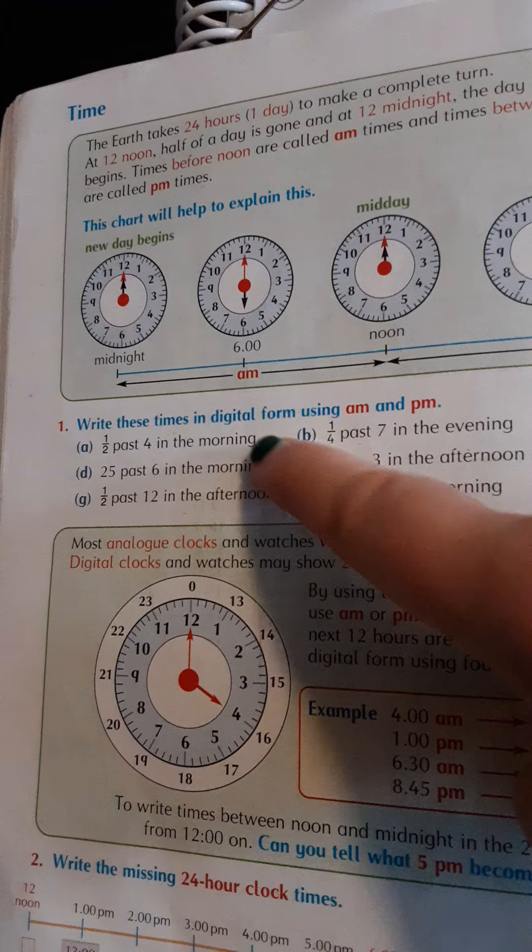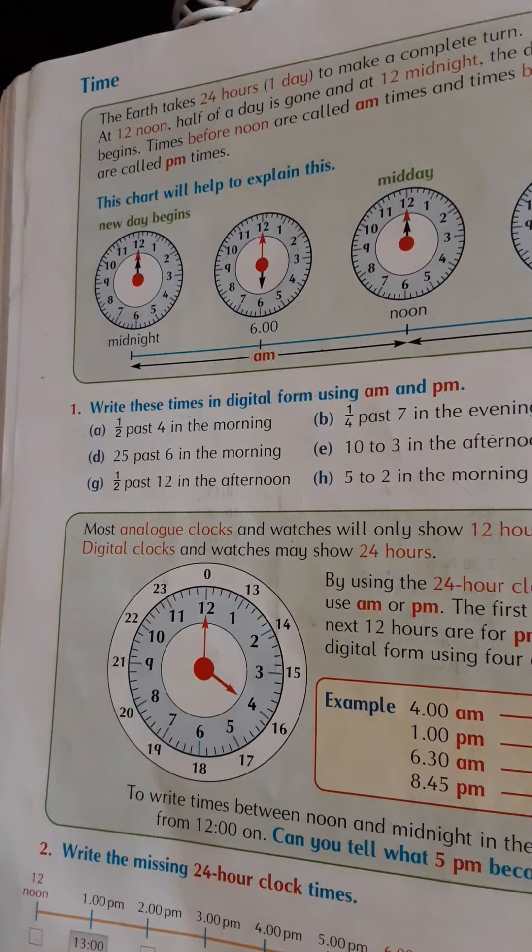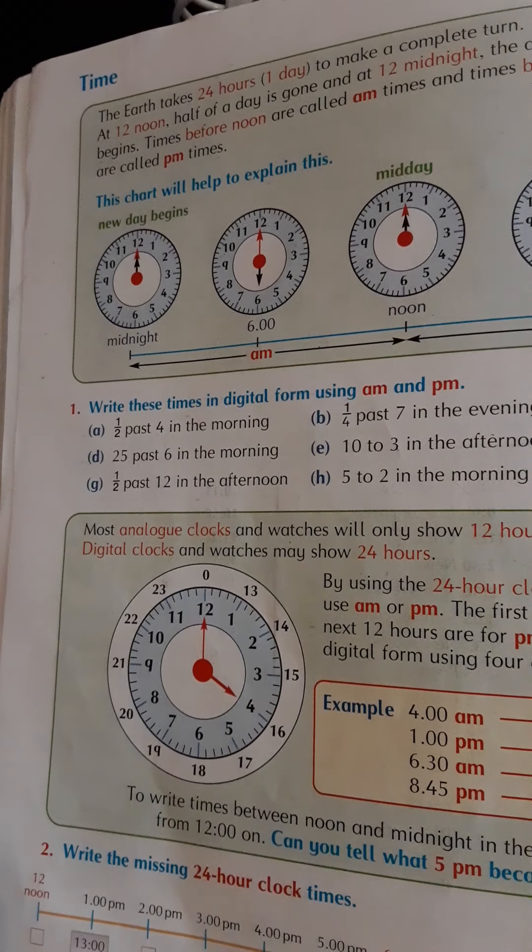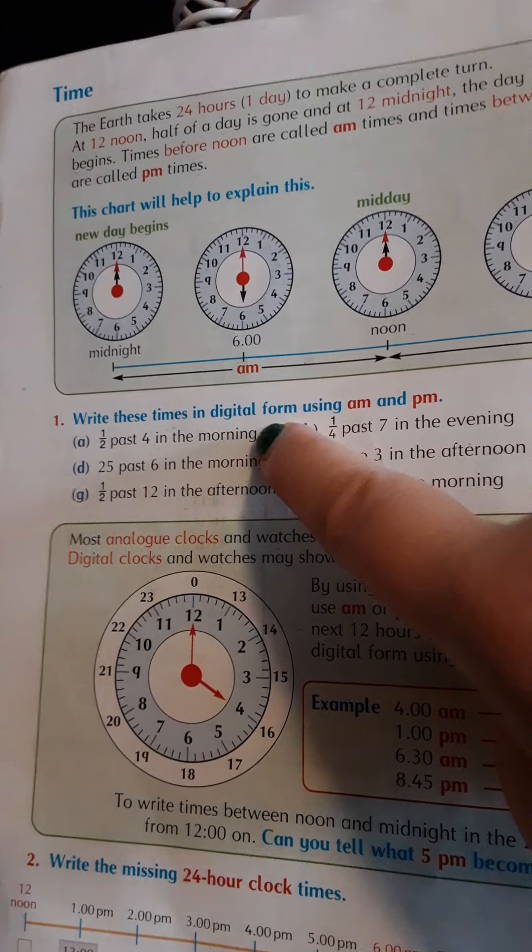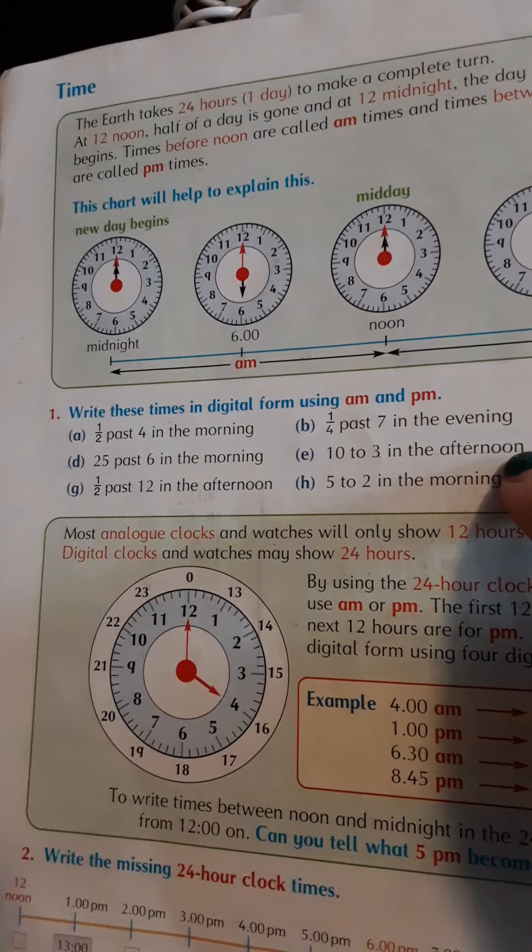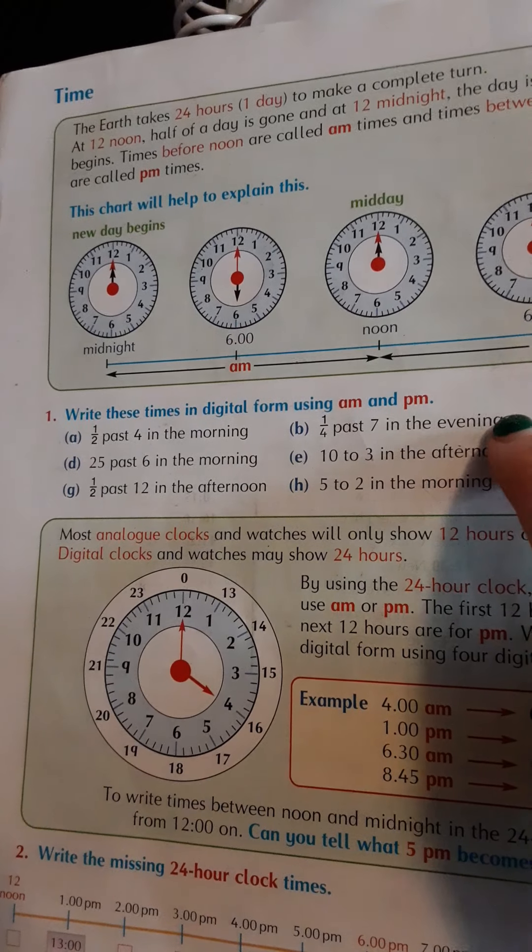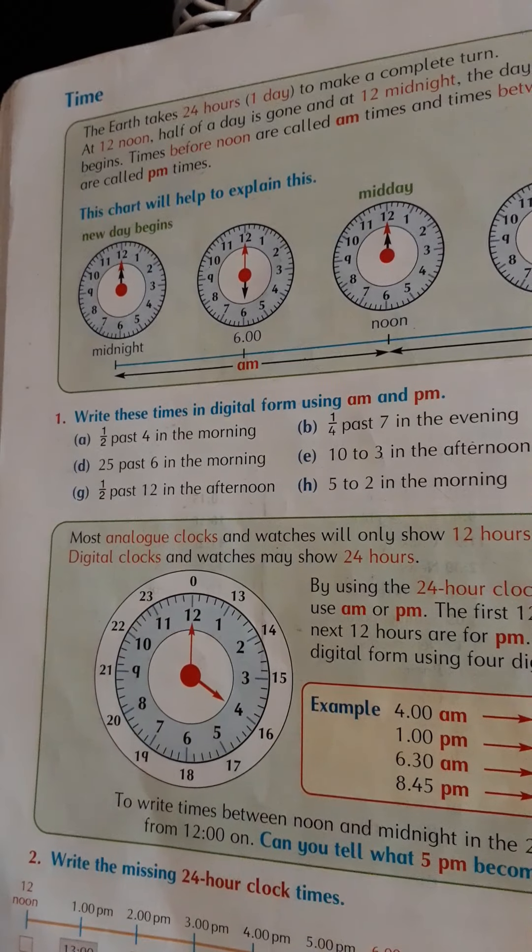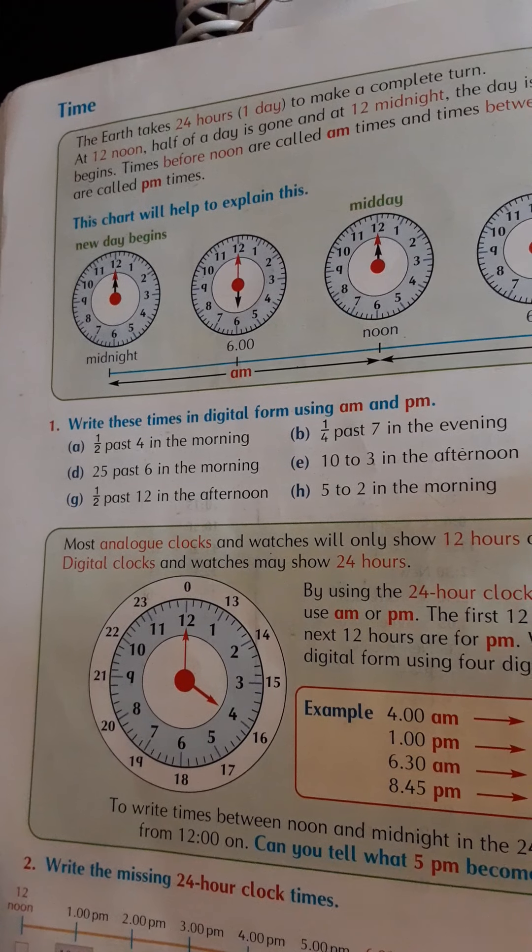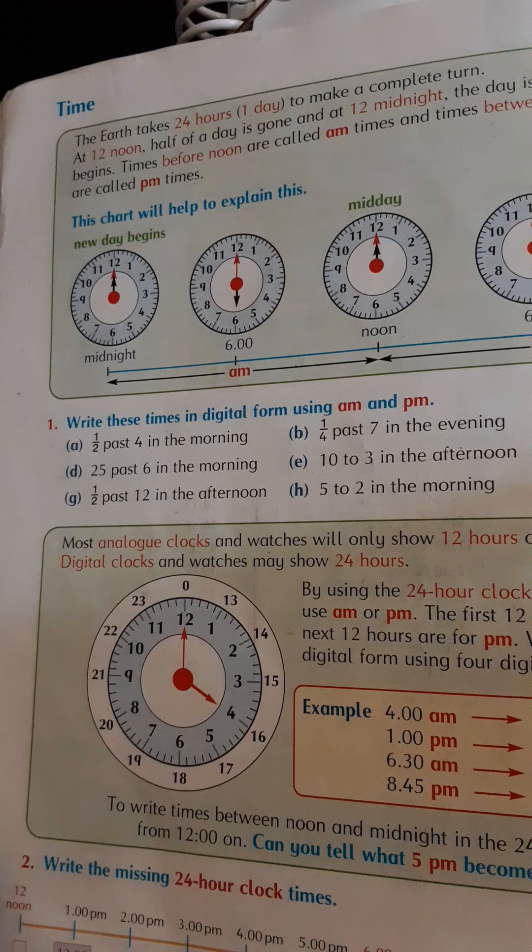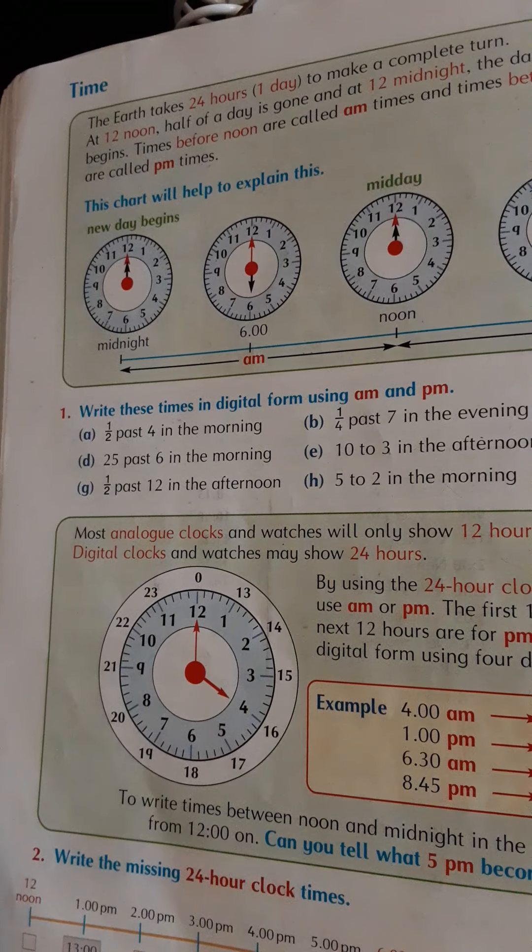So down here we are asked to write these times in digital form using a.m. and p.m. When you see 'in the morning' you're going to use a.m. When you see 'in the afternoon' and 'in the evening' you're going to use p.m. At night will be p.m. as well.